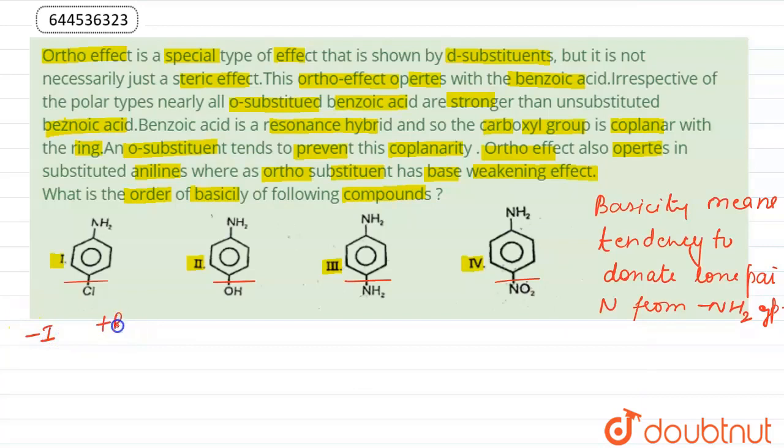In second, OH has plus R and minus I effect, but plus R is more dominating factor as compared to minus I. In NH2, there is also plus R and minus I. Plus R is dominating factor.